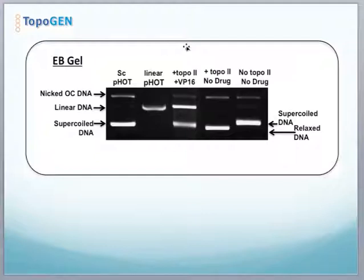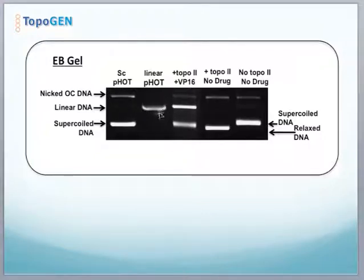Typically, one uses ethidium bromide gels to look at the mechanism and understand if there's any nicking going on — which would appear as an increase in nicked open circular DNA — or if there's an additional increase in linear DNA.